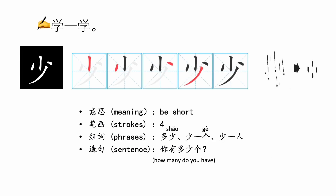Next, let's learn the first character: 少, meaning few or a small amount. It is opposite to 多, meaning many.